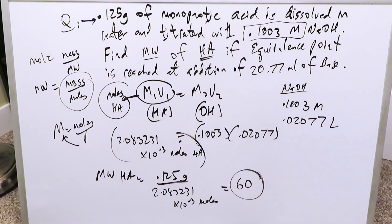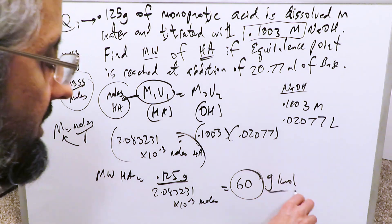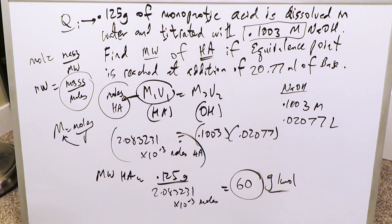My acid will have a molecular weight of 60, and the answer should be right, 60 grams per mole, and the question has been completed. We don't have to worry about the exact identity of this acid, but our question was only to determine the molecular weight. Question has been completed. Thank you for watching.